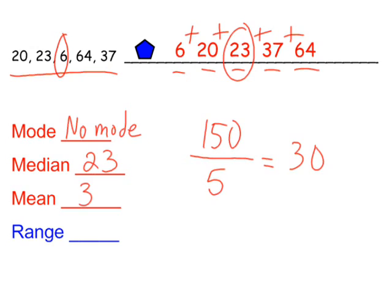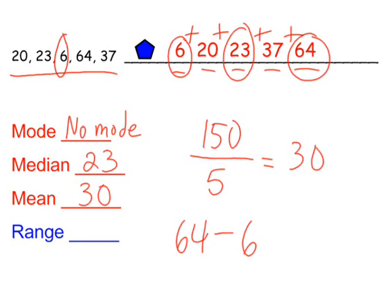The range is really easy to find. Because all the numbers are in order, it makes it easy. We take our highest piece of data, which is 64, and subtract our lowest piece of data, which is 6. That gives us a range of 58.